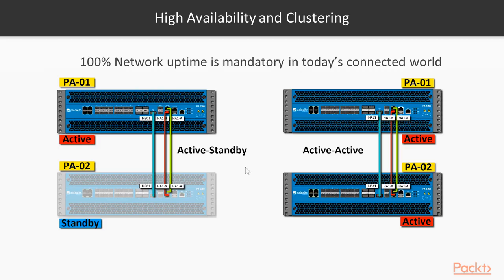In this video we're going to take a look at High Availability and Firewall Clustering in the Palo Alto platform. This is a must if you're running any critical environment — you should definitely have High Availability. You need to have an N+1 environment, meaning one active instance and at least another one in standby in case the primary goes down or fails for whatever reason.